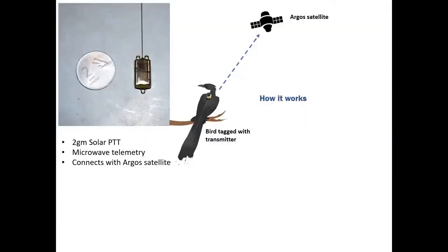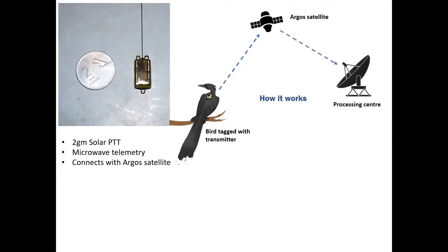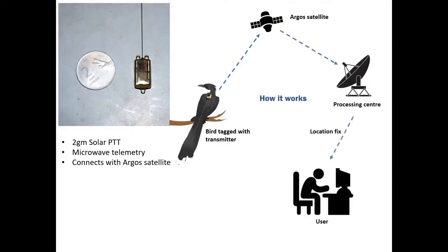We used a 2-gram solar PTT to understand its migratory route. It is one of the lightest satellite transmitters available to date. It connects with the Argos group of satellites. The bird tagged with the transmitter relays data to the Argos satellite, which then sends the data back to a processing center. From there, location fixes — mainly latitude and longitude — along with auxiliary information like data class and altitude, are sent to the user, who can download the data from the Argos website.